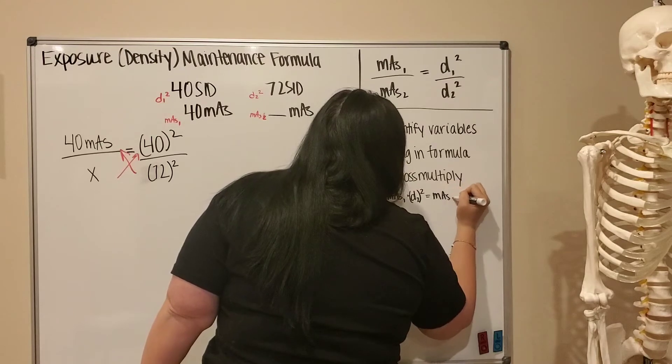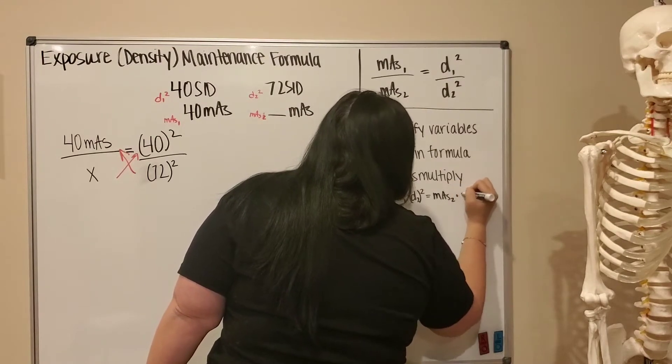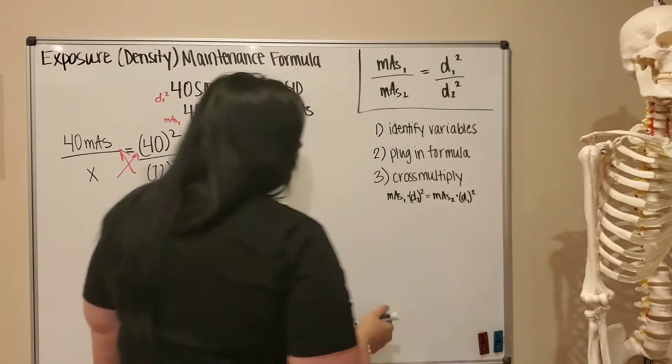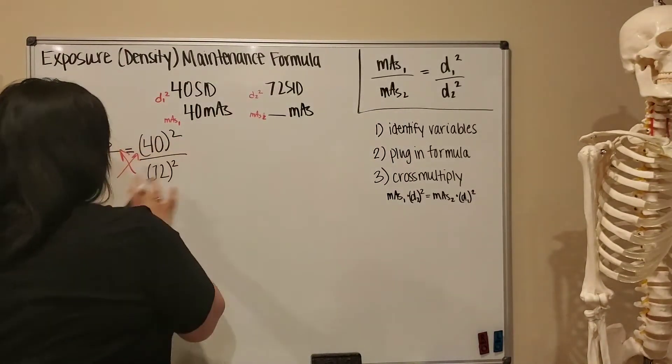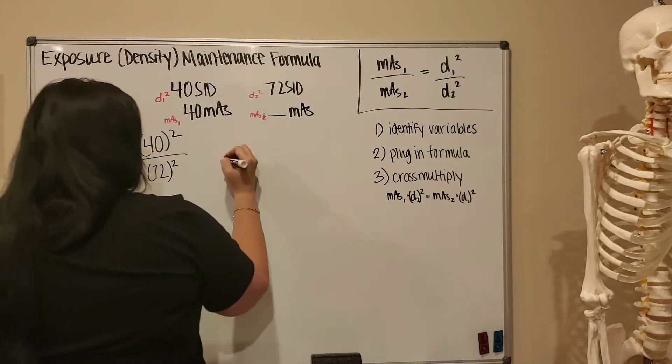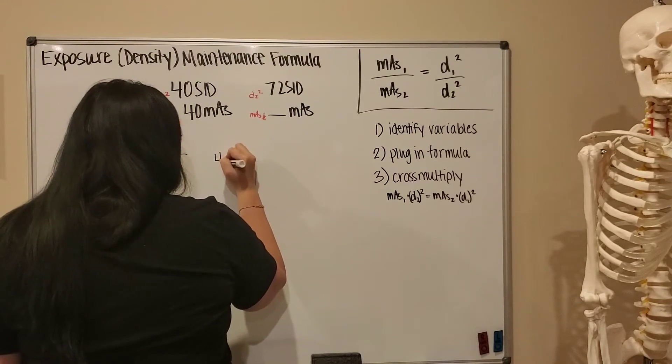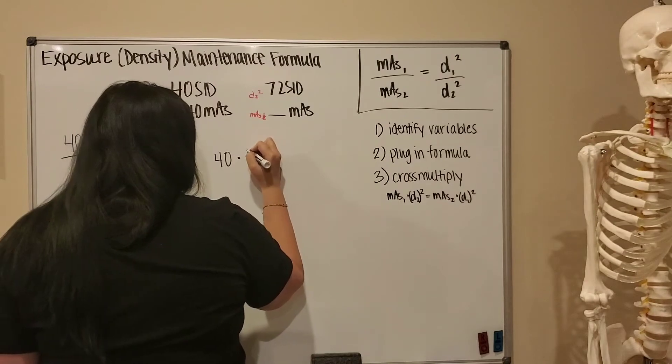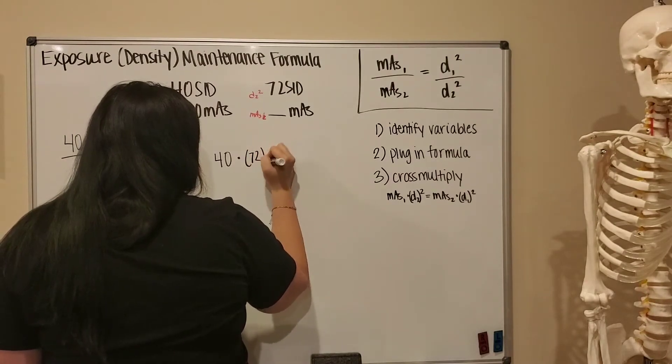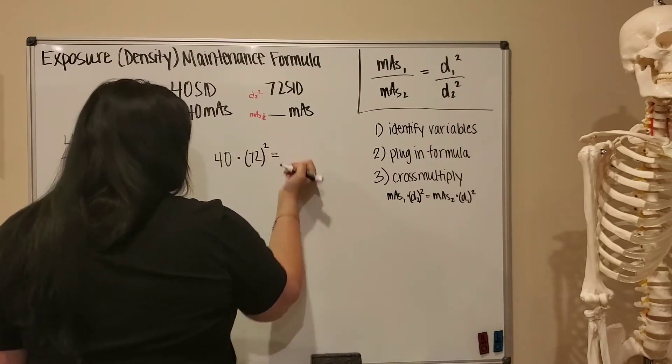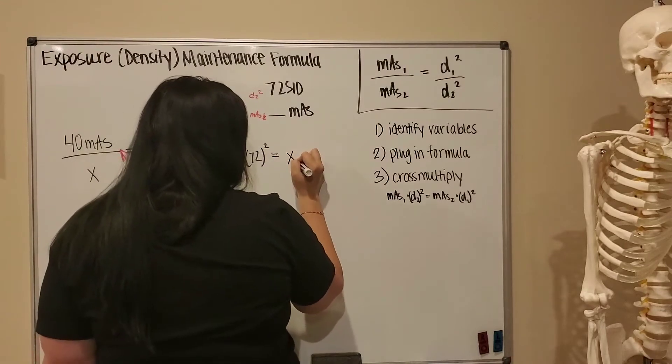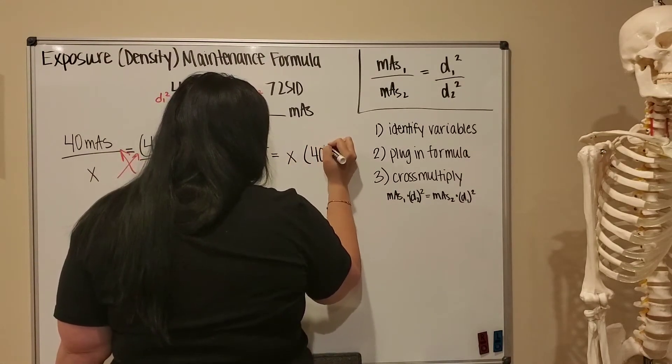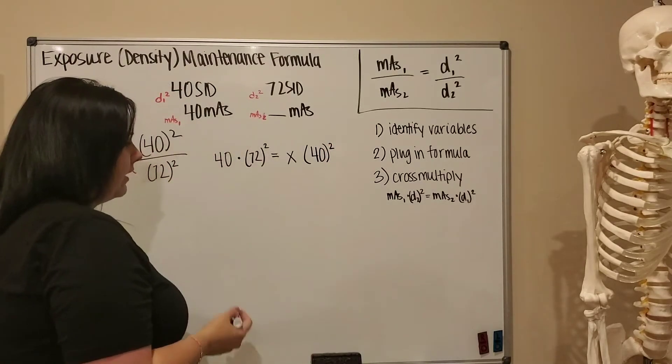Now if I move these numbers into that format, that's going to be 40 times 72 squared is equal to our unknown variable times our distance 1, 40 squared.